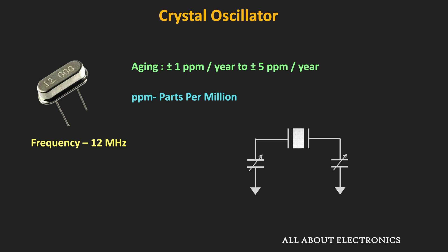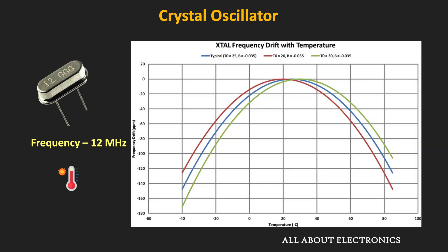Apart from aging, the crystal oscillator frequency can also change due to temperature. In normal crystal oscillators, the drift in frequency due to temperature is substantial compared to aging. In applications where a high level of stability is required, such drift in frequency due to temperature is not acceptable. For such applications requiring high frequency stability over the operating temperature range, different types of crystal oscillators can be used.